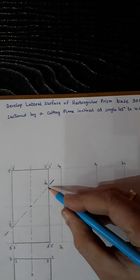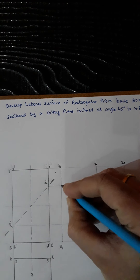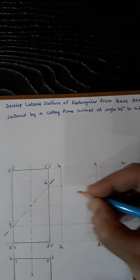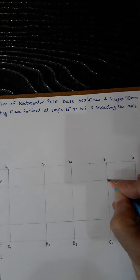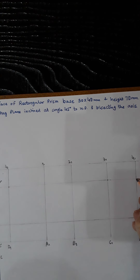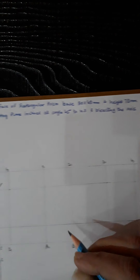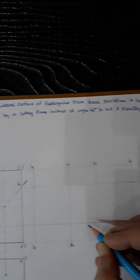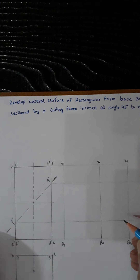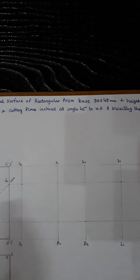Check the front view: Q lies on edges 3-4, so on the development it falls on edges 4d and 3c. P is lying on edges 1a and 2b — you can verify this from the front view. These are the cutting plane intersection points on the development.